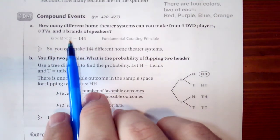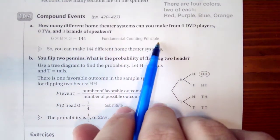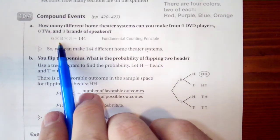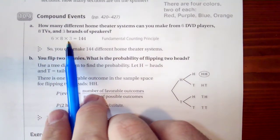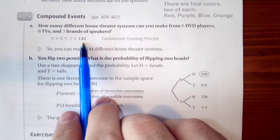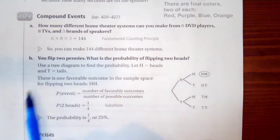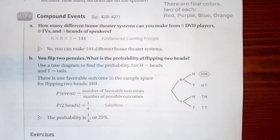We're going to multiply them all together and that's using the fundamental counting principle. We're just going to go 6 possibilities times 8 possibilities times 3 possibilities gives us a total of 144. And that's known as our fundamental counting principle where you can multiply all of them together and figure out what our total number of outcomes are.